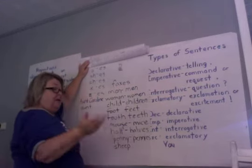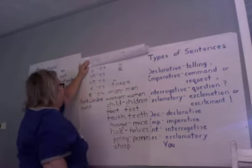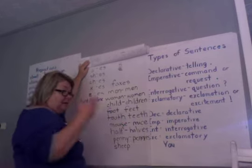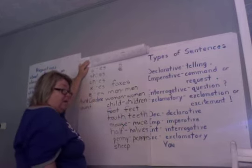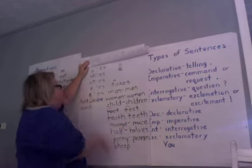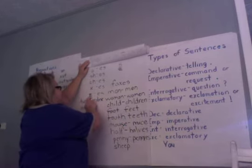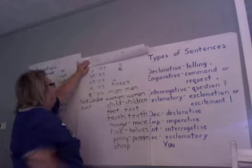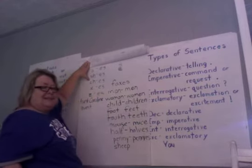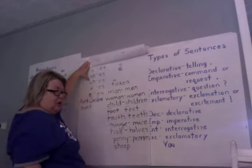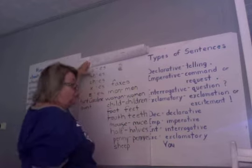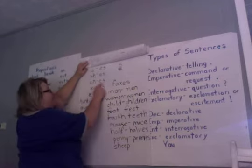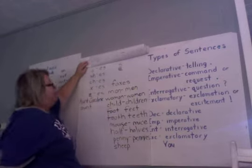The word fox would be foxes. The word buzz — that ends in a Z, so it would be buzzes with an ES. A word like church ends in CH, so to make it plural, more than one church would be churches with an ES on the end.